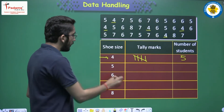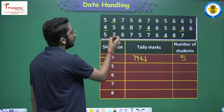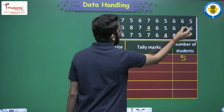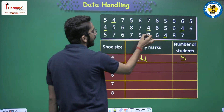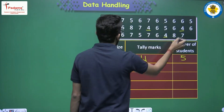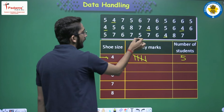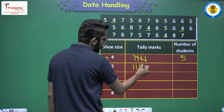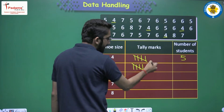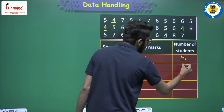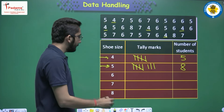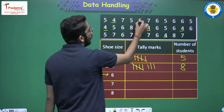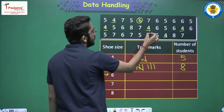For shoe size 5, counting gives us 8 students. So we draw one complete tally group of 5, then 3 more marks — total 8. For shoe size 6, counting gives 10 students, which is two complete tally groups of 5 — total 10.